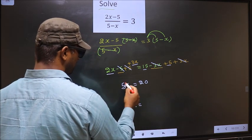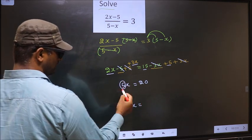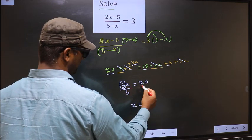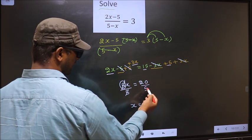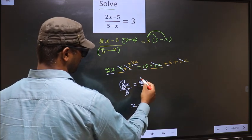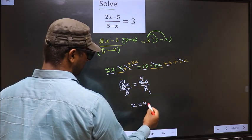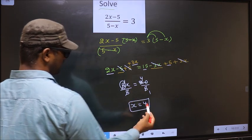So to remove 5, you divide by 5 on both sides. So this cancels out, here you get x, and 20 divided by 5 is 4. So we got x equal to 4 as our answer.